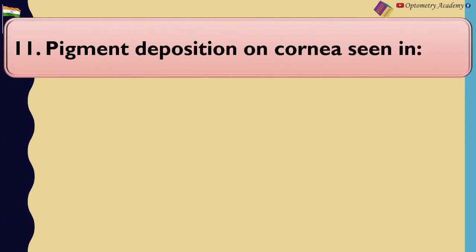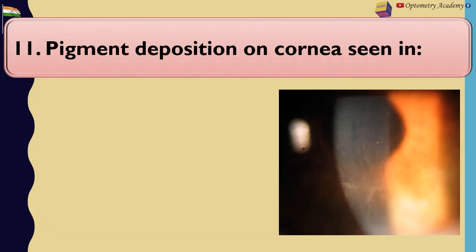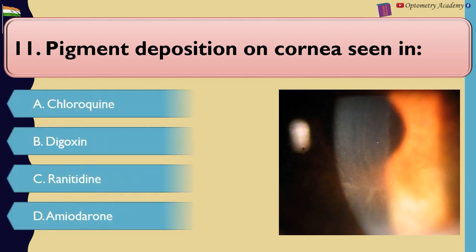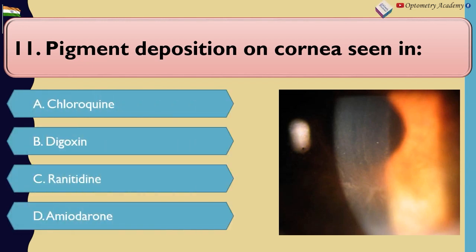Pigment deposition on the cornea is seen in: A. Chloroquine. B. Digoxin. C. Ranitidine. D. Amiodarone.